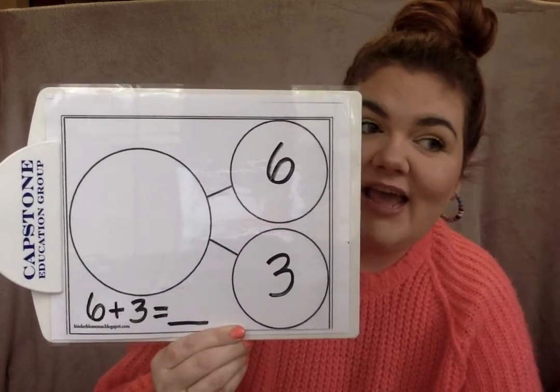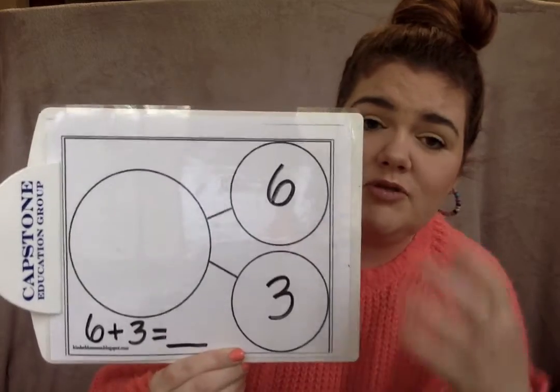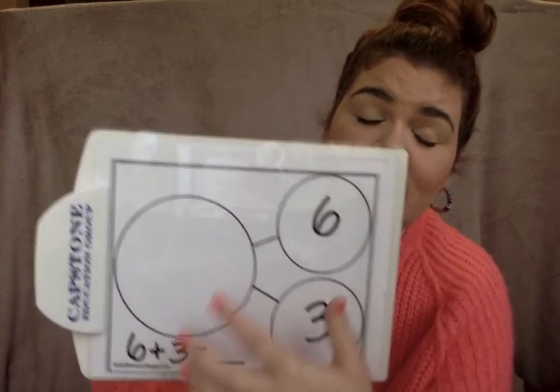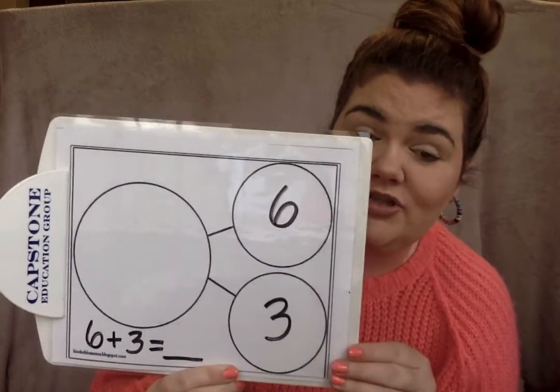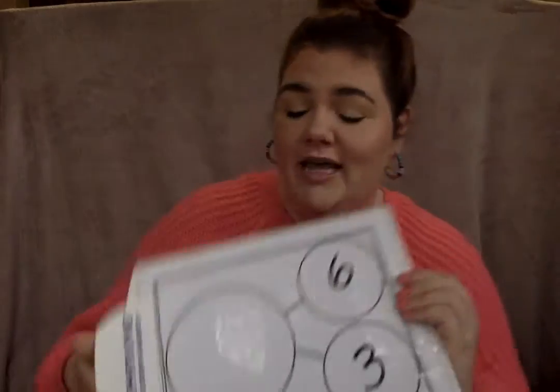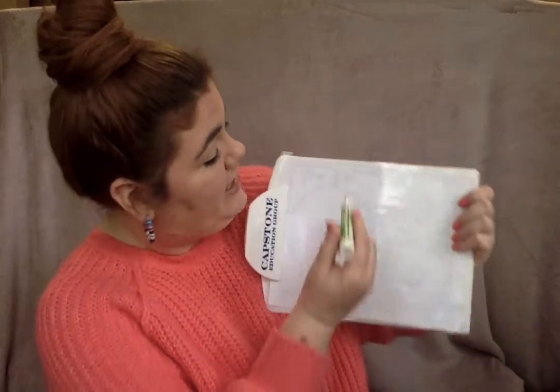So parents, a way to help if your student is having issues or problems trying to figure out how to solve for this problem — a great way to help them is they can draw shapes on the back. The two parts were six and three.